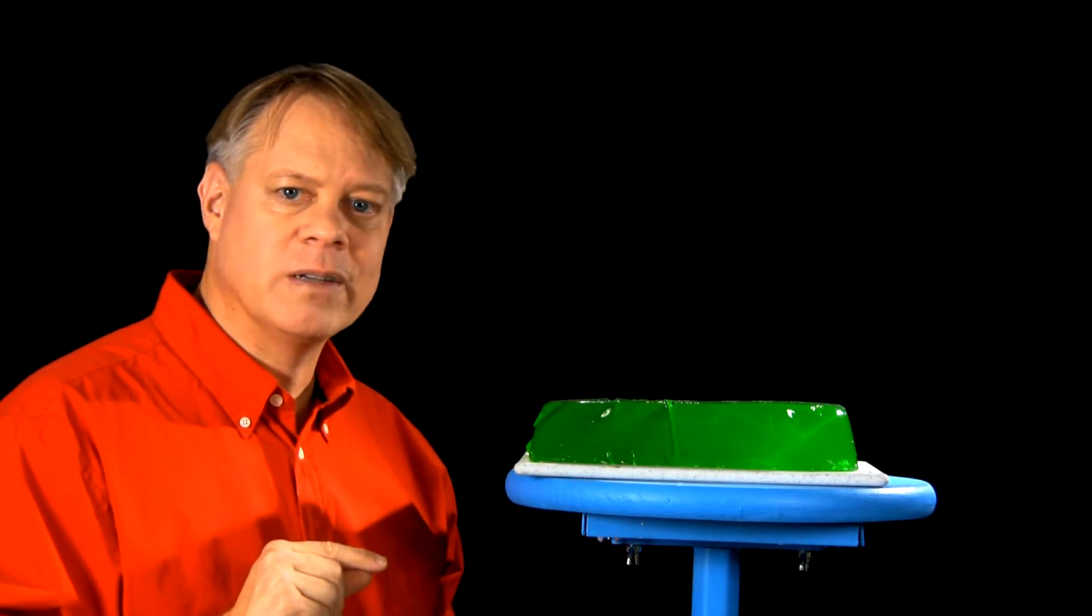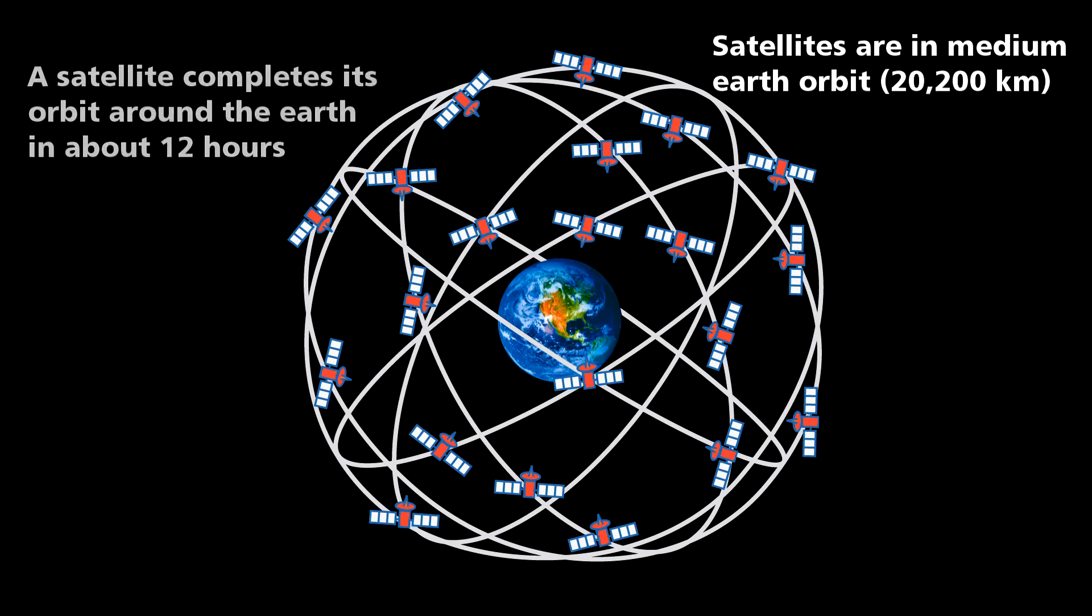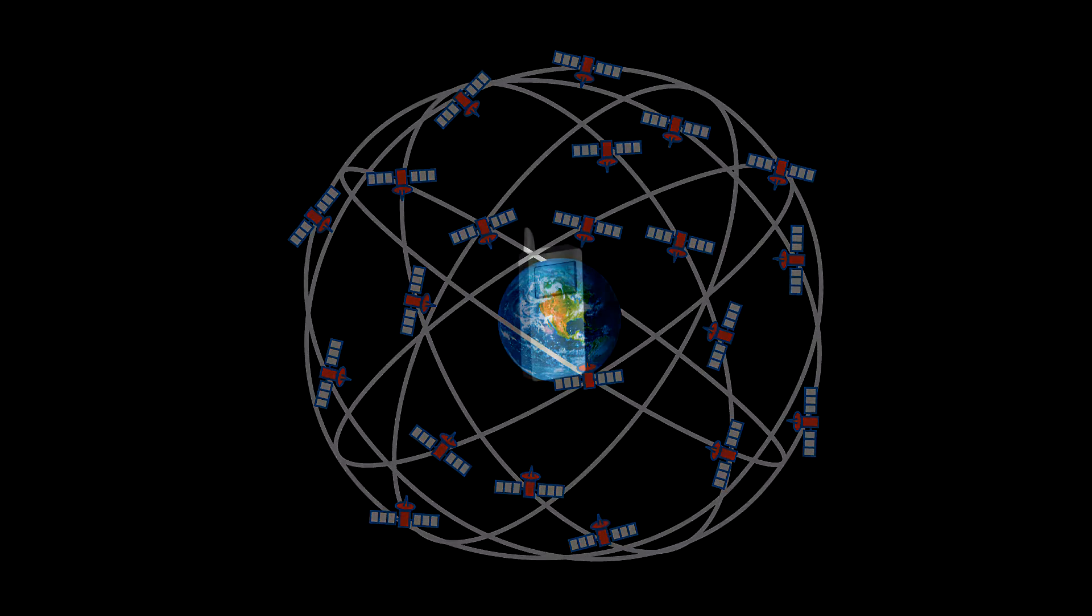Our world runs off such accuracy. For example, the global positioning system, GPS, requires it. The global positioning system consists of 24 satellites orbiting the earth.